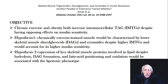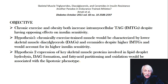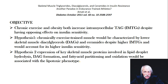Chronic exercise and obesity both increase intramyocellular TAG (IMTGs) despite having opposing effects on insulin sensitivity. Chronic exercise builds IMTG as fuel for sustained muscle contraction — long-distance runners have a lot of IMTG, and it's not a bad thing. In obese patients, the lipid is more dispersed rather than forming one central oil droplet like in high-functioning athletes, and because of that it's metabolized less efficiently.